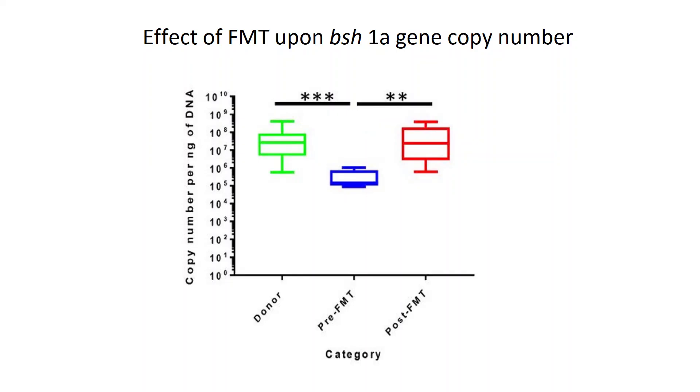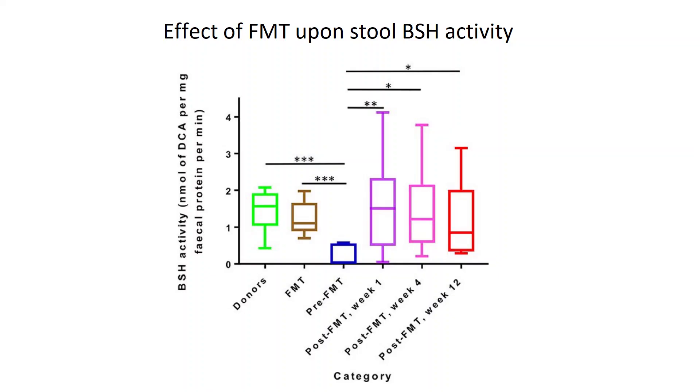To explore this association further, we went on to specifically examine the effect of FMT for RCDI upon copy number of a range of BSH genes. We noted that in all of the patients examined after FMT, there was an increase in BSH levels consistent with that of healthy donors. We further went on to perform a specific enzyme activity assay, looking at the level of BSH enzyme activity within the stool. As expected, successful FMT was associated with restoration of BSH levels similar to donors within one week of FMT, and this was sustained at 12 weeks post-FMT.